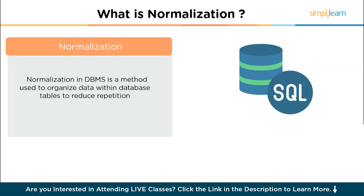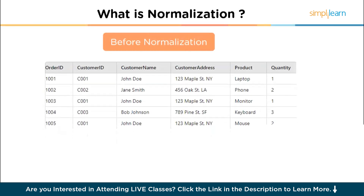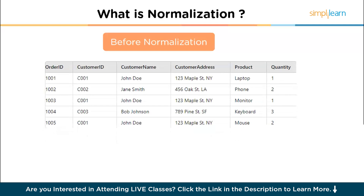Data redundancy means the unnecessary repetition or duplication of data within a database. For example, when the same piece of data is stored in multiple places, it can lead to inconsistencies and take up more storage space than needed. Consider the table with order ID, customer ID, customer name, customer address, product and quantity — you might see some data being repeated again and again.